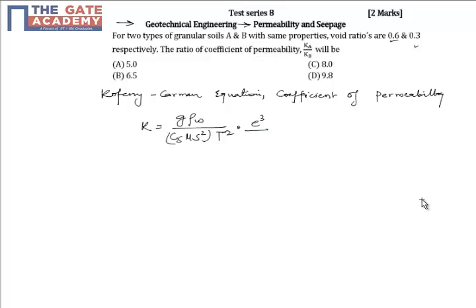Since the two soils are having the same properties, this part would remain equal, but the void ratio would be different for the two soils, that is 0.6 and 0.3. So we can write that k is equal to e cubed upon 1 plus e.